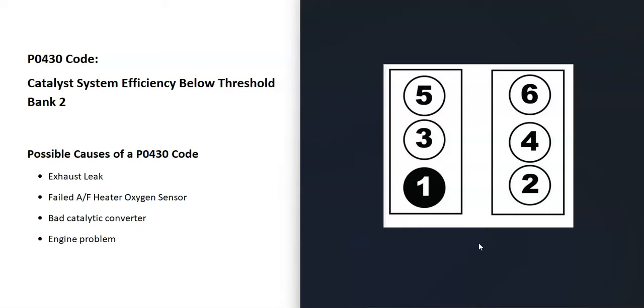V6 or V8 engines have two banks. Bank one is always going to be the side of the engine with the number one cylinder. If you find the number one cylinder, that'll be bank one, and the opposite side is going to be bank two. Bank two is the side of the engine the onboard computer is seeing a problem with.